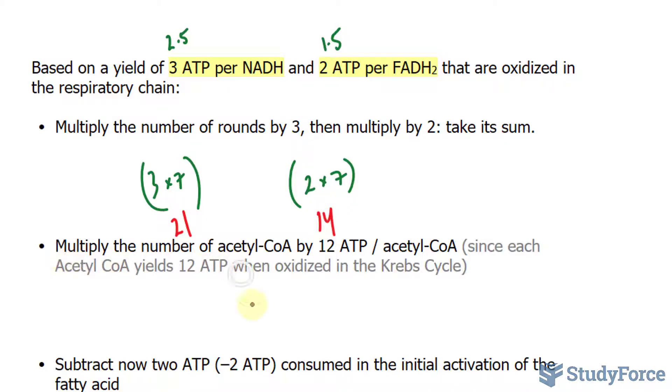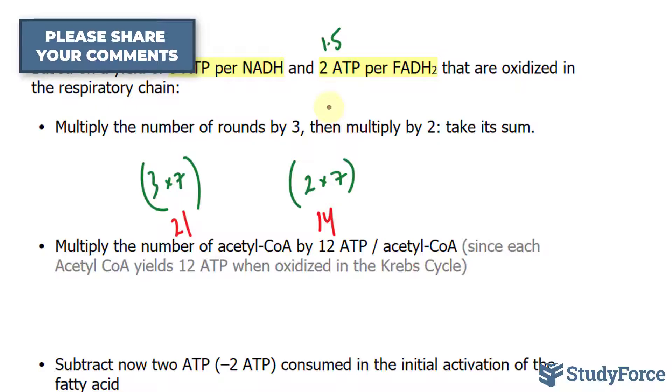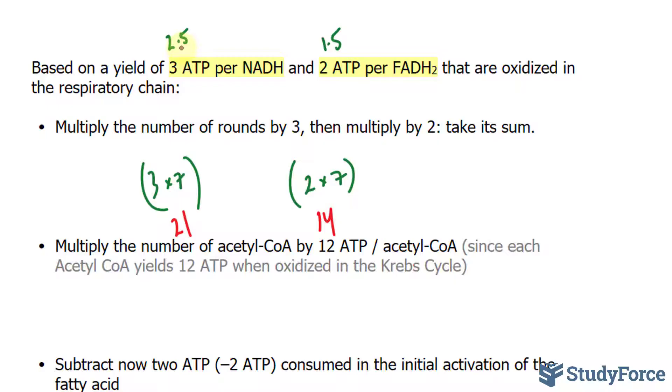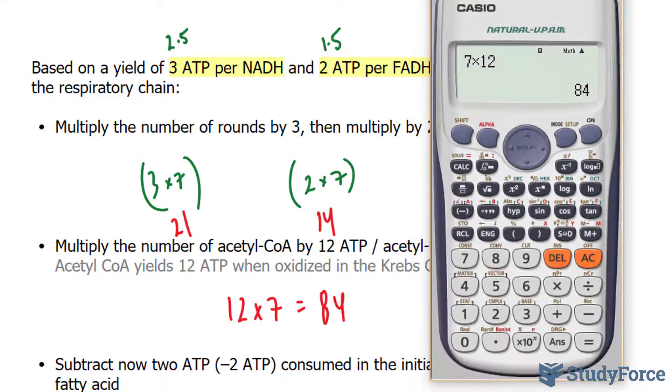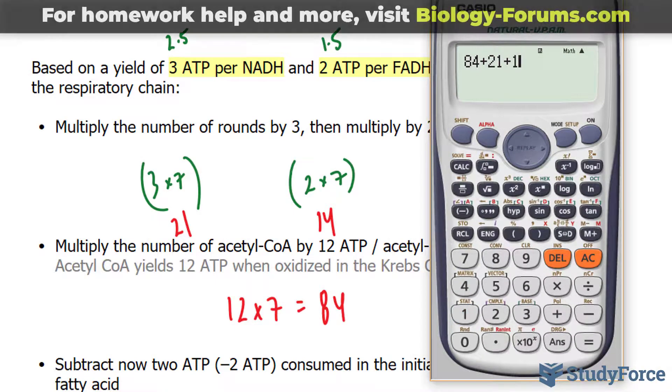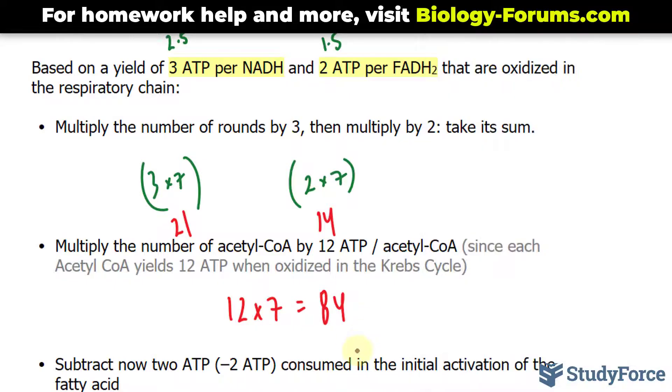In this point over here, we say multiply the number of acetyl-CoAs, which in our case is 7, by 12 ATP. Once again, you multiply by 12 ATP if you're using 3 and 2. Otherwise, you'd multiply by 10 and use 2.5 and 1.5. So I'll take 12 and multiply that by 7, which is equal to 84. Let's add up all these numbers: 84 plus 21 plus 14 gives us 119 ATPs formed.